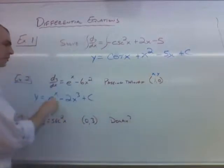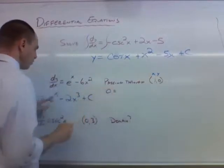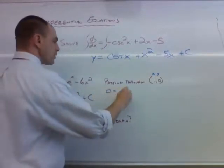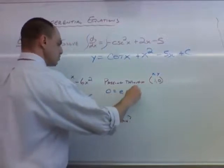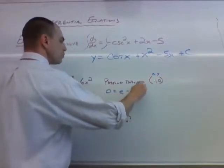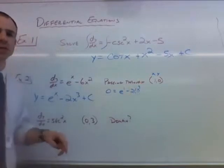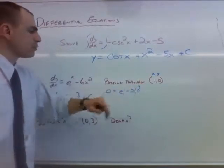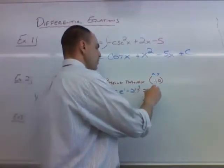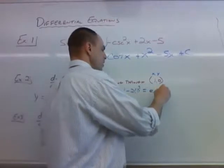So we're going to replace y with 0, so we have 0 equals, and then we're going to replace x with 1. So we have e minus 2 times 1 cubed. E to the first is really e. We don't need to write the 1 here. 1 cubed is 1. So what we end up happening here is e minus 2.